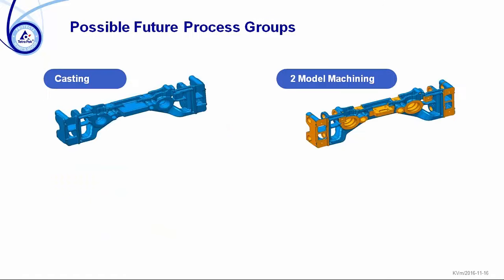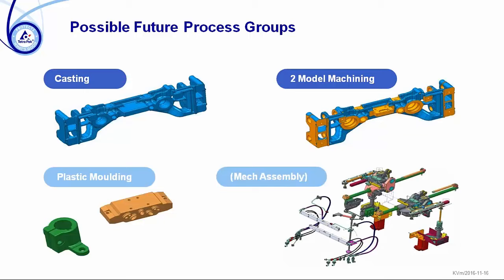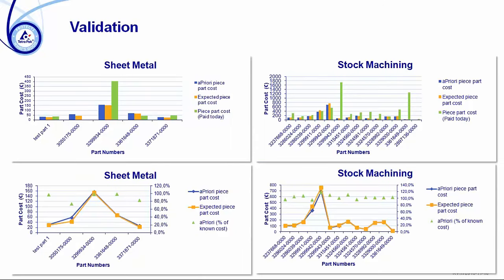We are entering into casting and mold machining as well, and might in the future also add plastic molding. We have, with the four production processes we're using today, spent and are still spending a lot of effort validating the process groups and adjusting them to our reality. For us it's really important to have good accuracy to build confidence in the tool. It's really important for our designers that they can trust the results at the concept stage to evaluate different concepts and options.